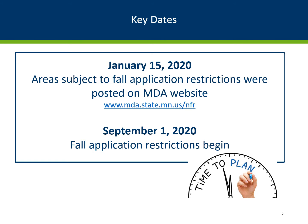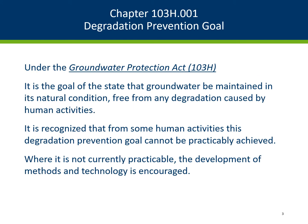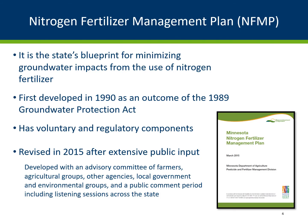On September 1, 2020, the fall application restrictions begin. The authority for the rule comes from the Groundwater Protection Act of 1989, which is Minnesota Statute 103H. The act resulted in a Groundwater Degradation Prevention Goal, enhanced regulatory authority for fertilizer practices, and the development of a Nitrogen Fertilizer Management Plan by the MDA. The Nitrogen Fertilizer Management Plan is the state's blueprint for minimizing groundwater impacts from the use of nitrogen fertilizer.